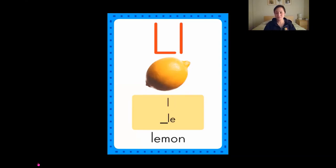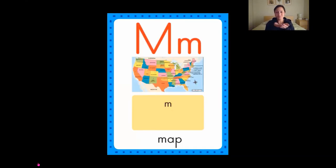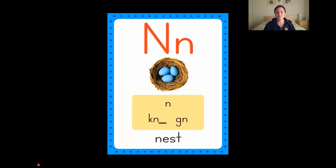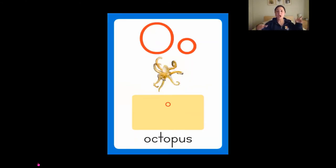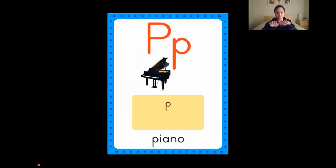M is for map, map. N is for nest, nest. O is for octopus, octopus. P is for piano, piano.